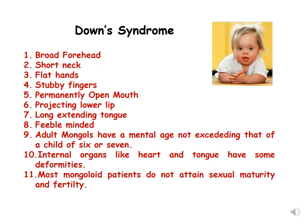The person with Down syndrome has 47 chromosomes instead of 46. Morphological features include broad forehead, short neck, flat hands, stubby fingers, permanently open mouth, projecting lower lip, long extending tongue, and feeble-mindedness. Adult Mongols have a mental age not exceeding that of a child of 6 or 7, and internal organs like the heart have some deformities. Most mongoloid patients do not attain sexual maturity and fertility.